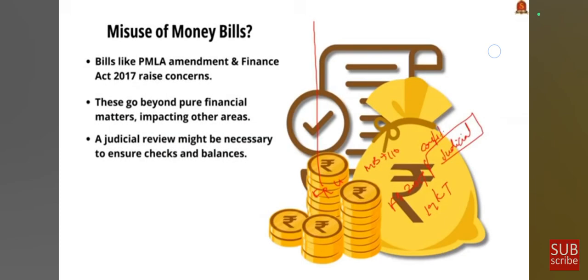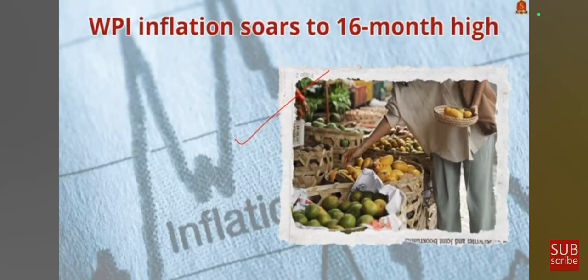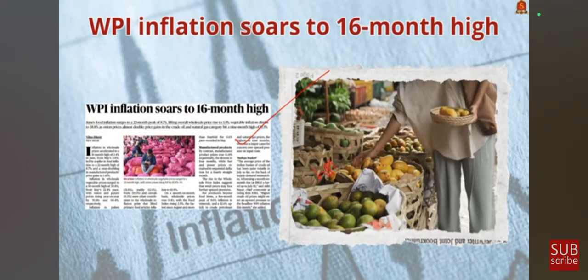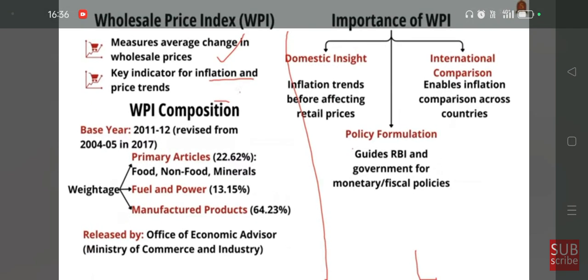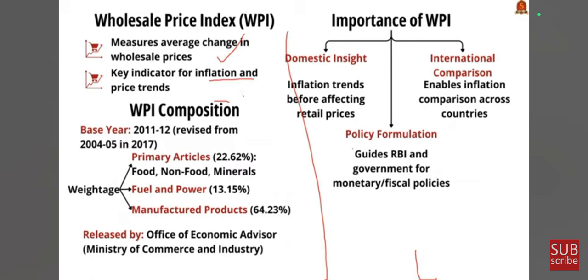This news article talks about WPI. According to the news, the Wholesale Price Index has reached a new high in the last 16 months. In this backdrop, let us revise what WPI is from the prelims perspective. WPI measures the average change in the prices of goods at the wholesale level. It is a critical indicator for understanding inflation and price trends in an economy. All transactions at the first point of bulk sale in the domestic market are included. A major criticism of this index is that the general public does not buy products at wholesale price. Remember the base year of WPI is 2011–12, revised in 2017; before that, 2004–05 was the base year.